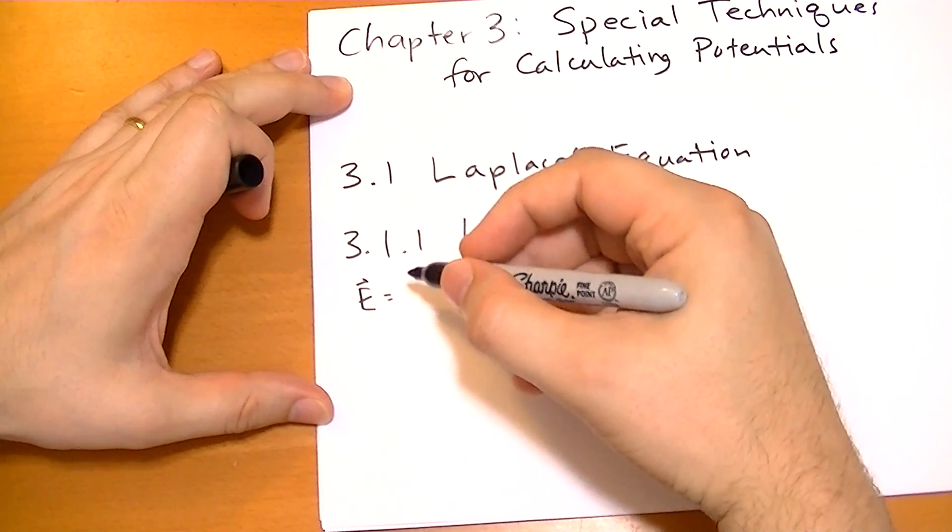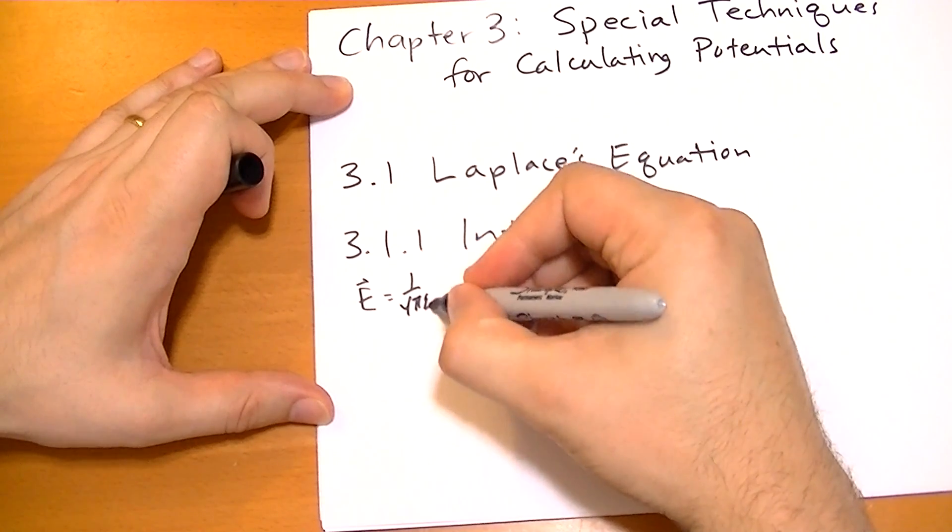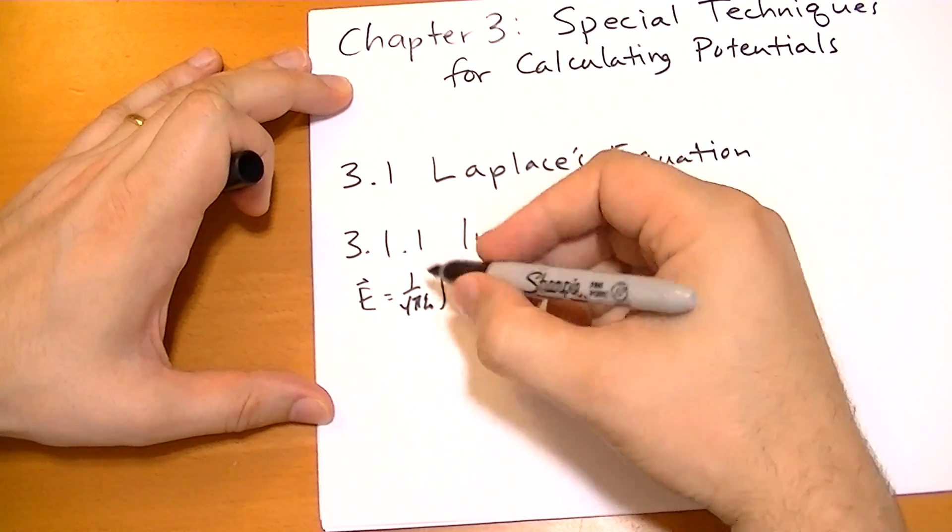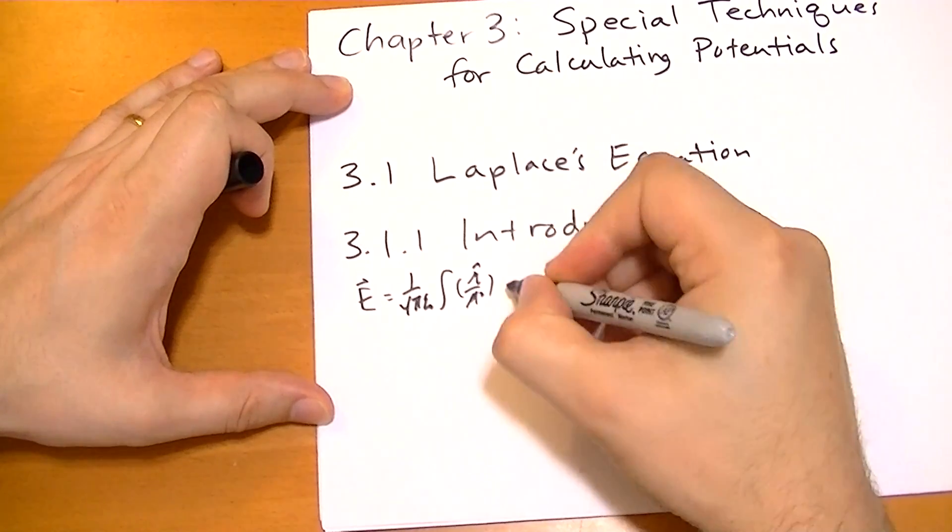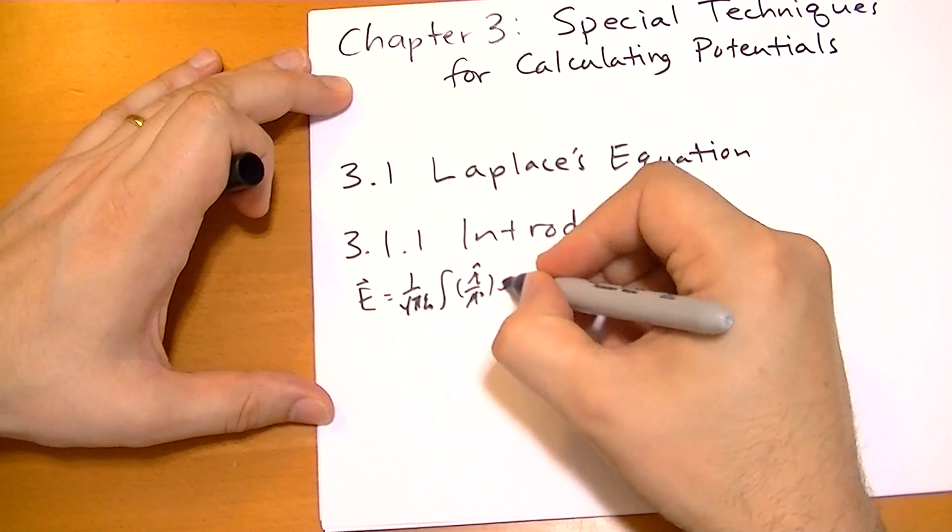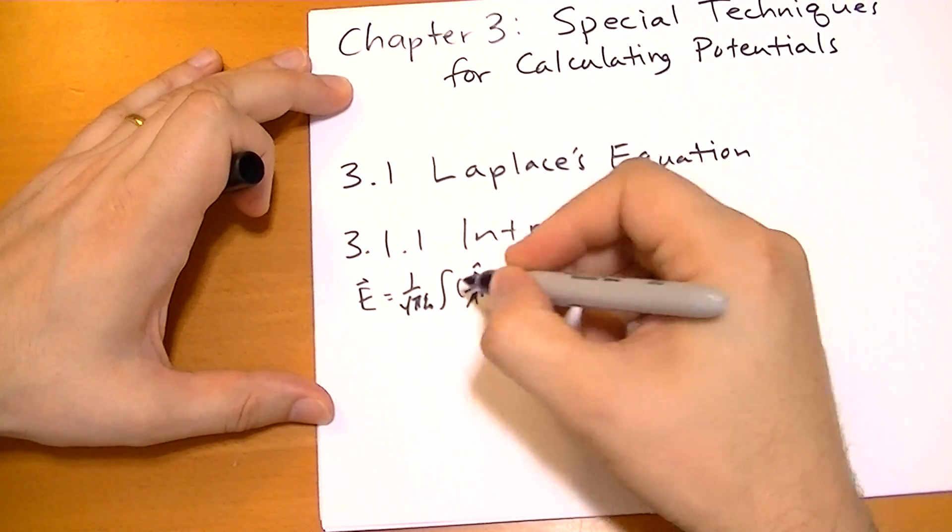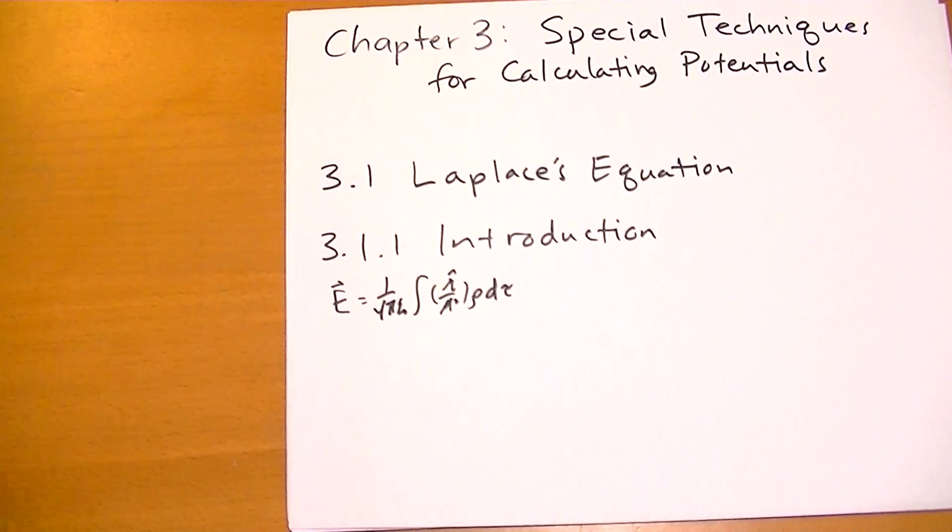which is 1 over 4 pi epsilon naught of the integral of r hat over r squared of the charge density over all of space. And that turns out not to be a very simple integral to solve.